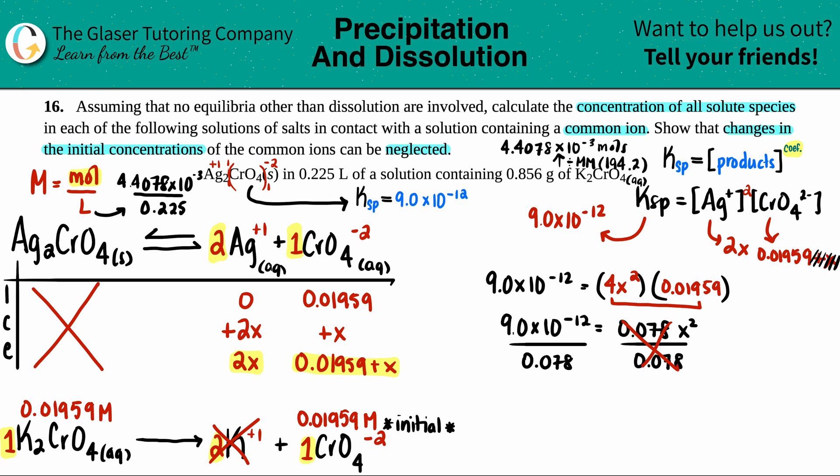9 times 10 to the negative 12th equals 0.0195 times 4, which is 0.078 times x squared. We're going to divide both sides by 0.078, and we have something equal to x squared. 9 times 10 to the negative 12th divided by 0.078.